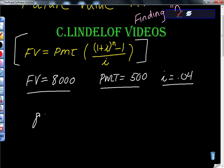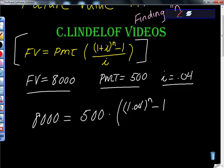The theorem says that future value, which happens to be 8,000, is equal to the payment of, in this case, 500, times 1 plus, let's just do it 1.04, to the nth power minus 1 all over 0.04.